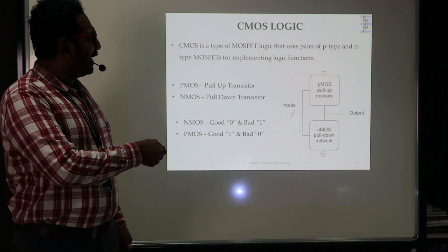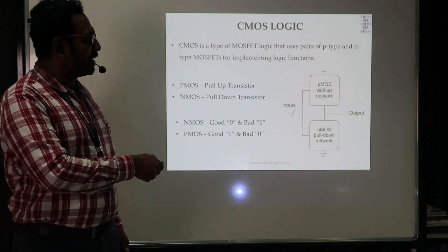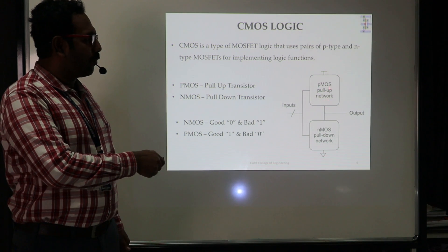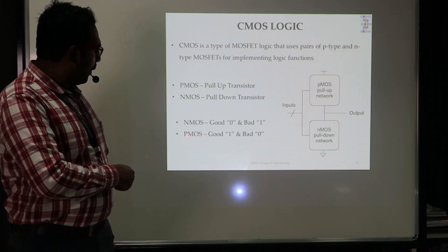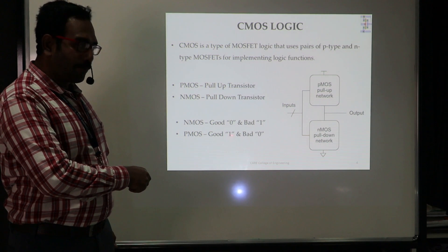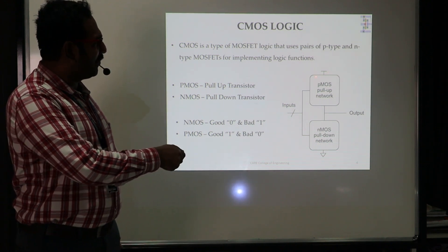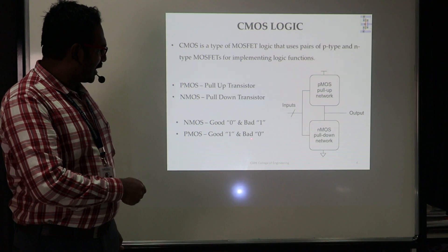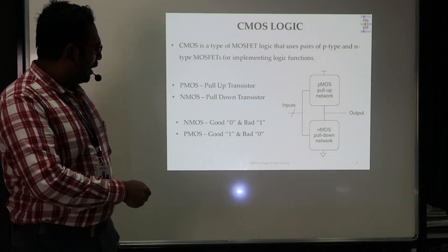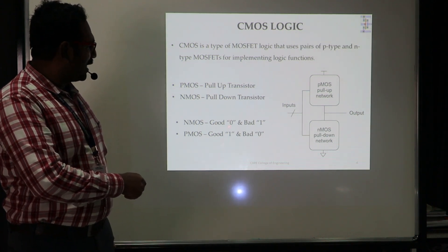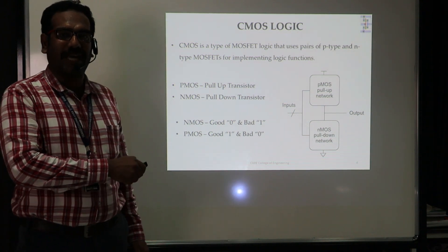In the diagram you can see that all PMOS transistors are present in the pull-up network. PMOS transistors produce good logic 1, so they are connected with the VDD power supply. At the same time, the NMOS network is connected with ground, since NMOS is good for logic 0 — it produces a good 0 output.